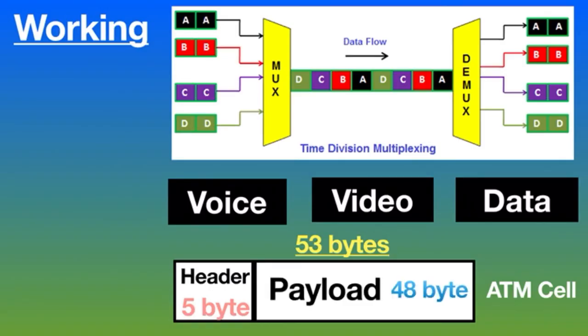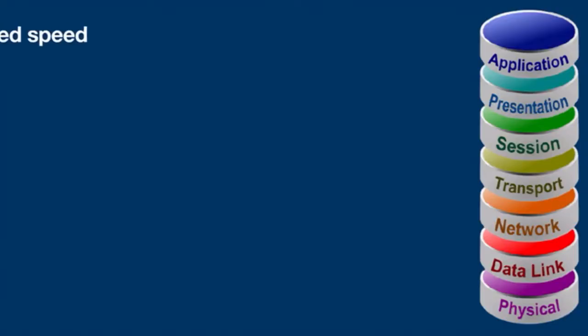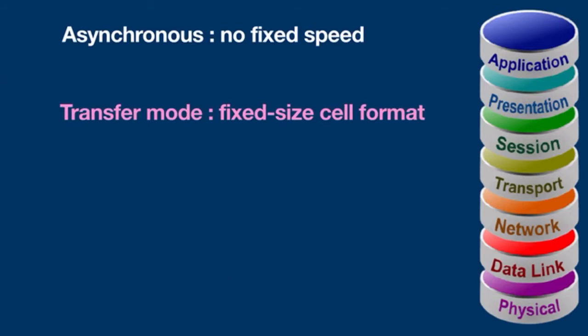The size of an ATM cell is 53 bytes: 5-byte header and 48-byte payload. There are two different cell formats: User Network Interface and Network Network Interface. Asynchronous in ATM means ATM devices do not send and receive information at fixed speed or using a timer, but instead negotiate transmission speed based on hardware and information flow reliability. Transfer mode in ATM refers to the fixed-size cell structure used for packaging information.